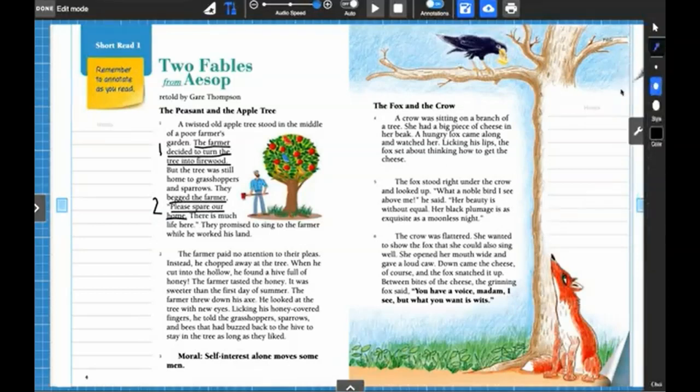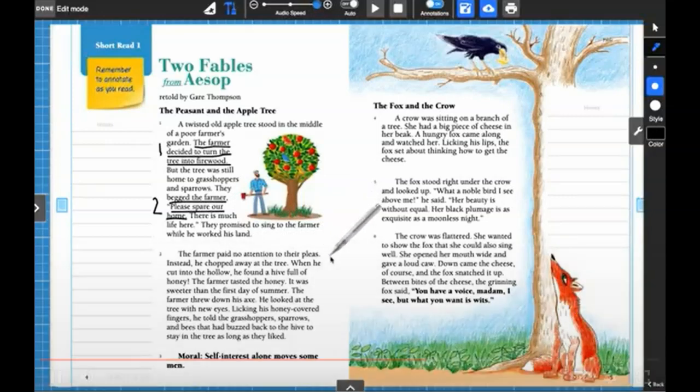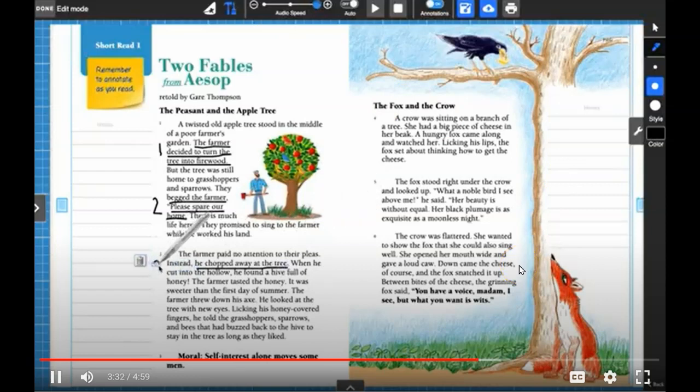All right, let's keep reading. So they continue to ask him to please spare their home, but we already got that, so I don't think we need to underline anything else here. This is some nice to know additional information. In the second paragraph, the farmer paid no attention to their plea. Instead, he chopped away at the tree. So what is he doing here? What is the action? He chopped away at the tree. That is something he does that will affect what happens next.